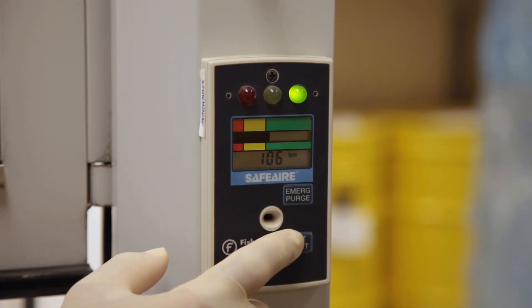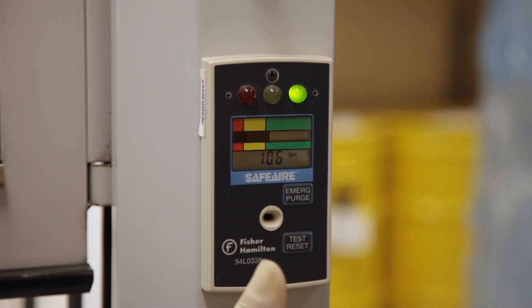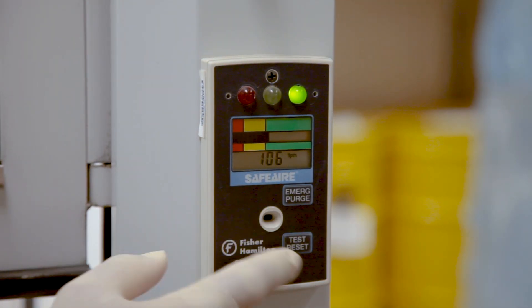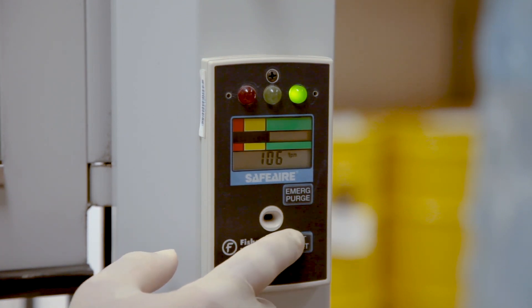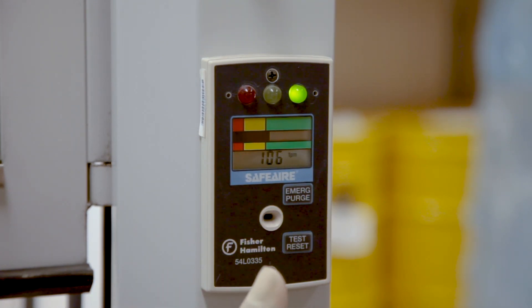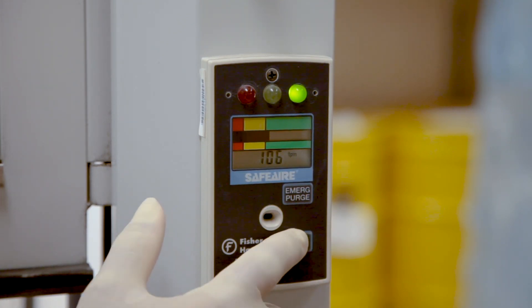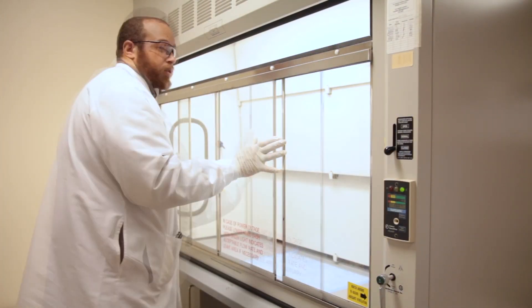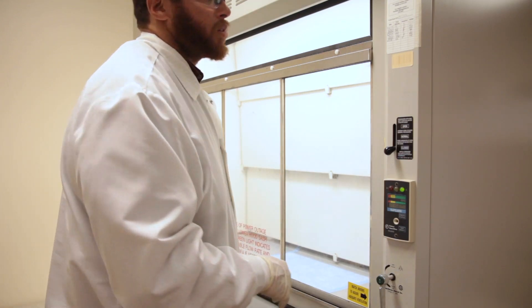All laboratory fume hoods are required to have airflow monitors, which indicate whether or not the fume hood is operational before use. The digital airflow display monitor shows the face velocity of the fume hood. This type of device commonly has an audio and visual alarm. Always verify proper function of the hood before use by checking the fume hood monitor or alarm before beginning your work.